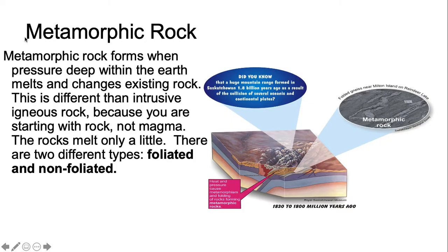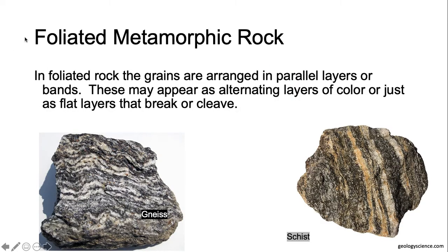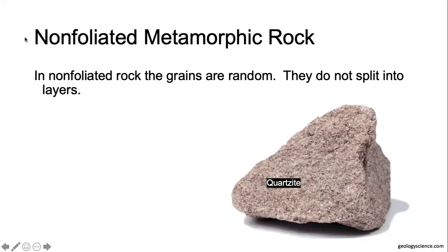For metamorphic rock, it forms deep within the earth when there's heat and pressure. There are two types of metamorphic rock: foliated and non-foliated. Foliated has stripes or bands when the minerals separate out by density. Non-foliated rock does not have stripes.